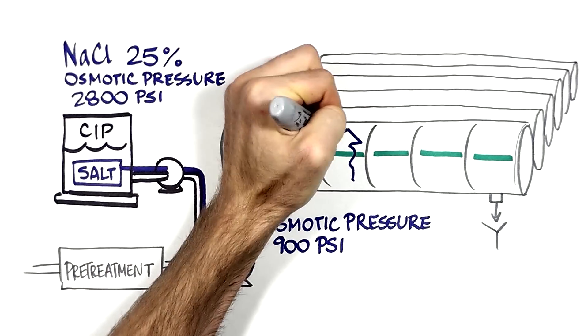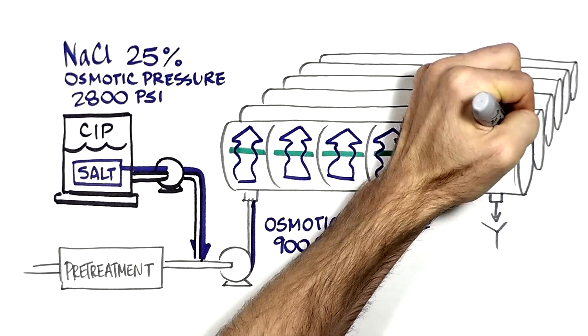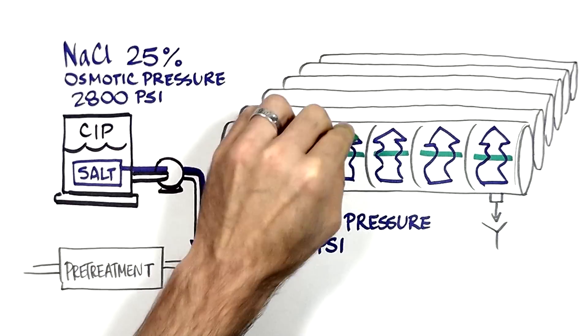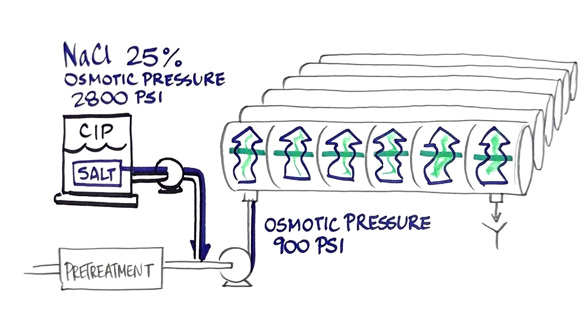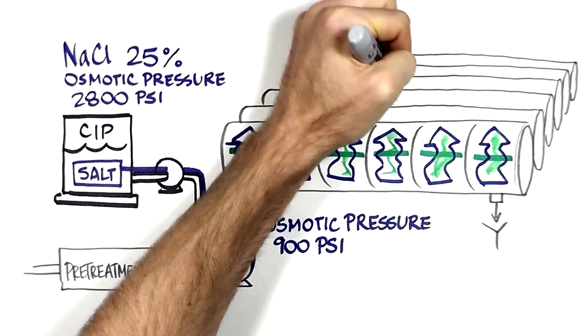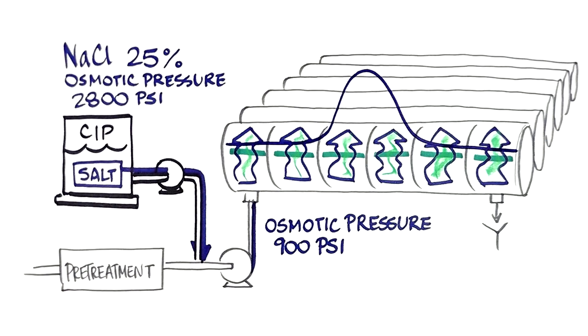Together with the feed, the slug moves along the membranes in the pressure vessel and backwashes each membrane in succession like a vacuum cleaner. Let's look at the freeze frame when the saline water slug is in the third and fourth membranes.